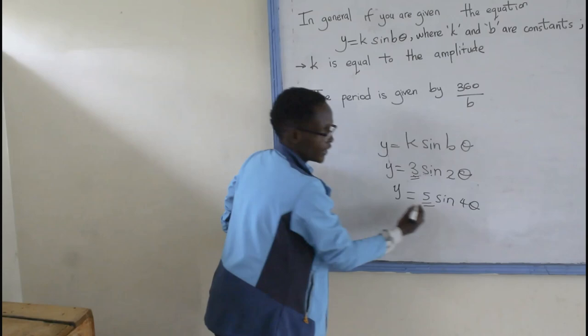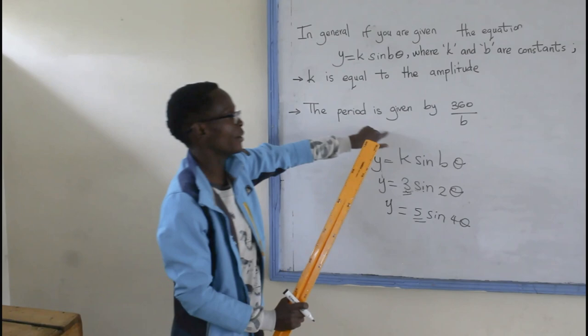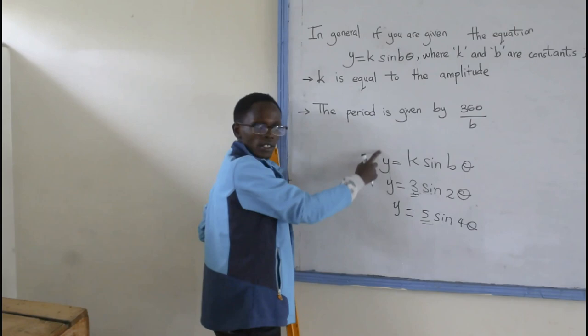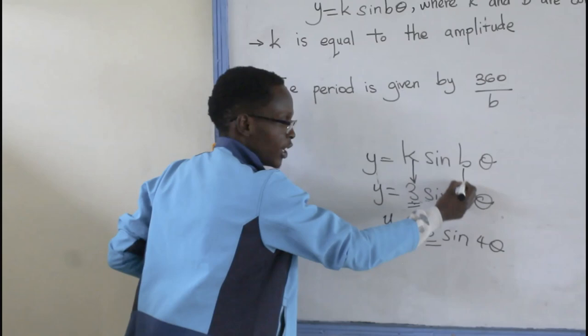Then, the second rule. The period is given by 360 divided by B. So, if you can just review these two coefficients, the value of K is 3, and the value of B is 2.